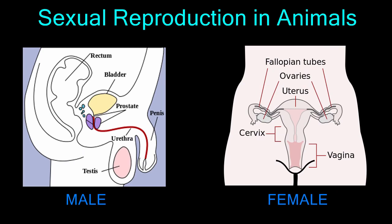You have now received an overview of sexual reproduction in animals. In the next two lessons, we will take an in-depth look at the male and female reproductive systems in humans and the specialized structures that make reproduction possible.